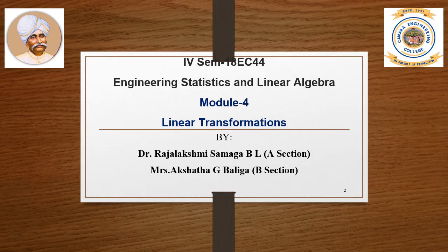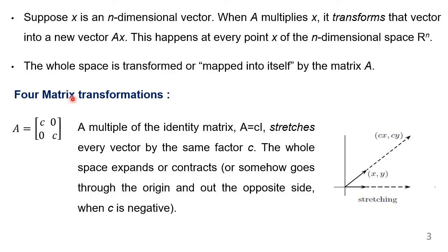Hello everyone. In this video, let us study the concept of linear transformation. In order to understand the concept of linear transformation, we consider an n-dimensional vector x. We try to multiply with the matrix A. It transforms that vector x into a new vector defined as A times x. This happens at every point x of the n-dimensional space R^n. The whole space is transformed or mapped into itself. There are four kinds of matrix transformations.